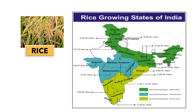Rice is mainly grown in West Bengal, Andhra Pradesh, Tamil Nadu, Punjab, Haryana, Bihar, Uttar Pradesh, Chhattisgarh, Assam, Odisha, Kerala, Telangana and Karnataka.